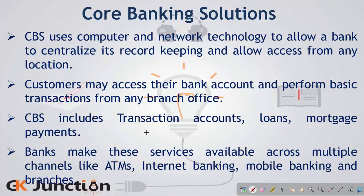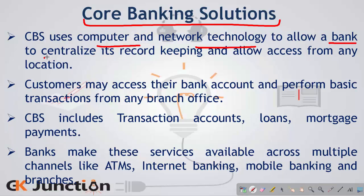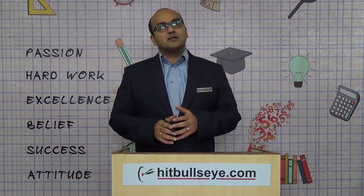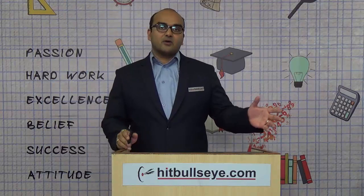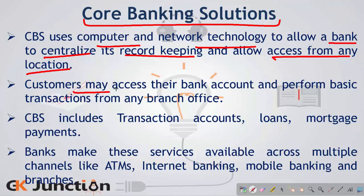Next, we try to understand a very important concept: Core Banking Solutions (CBS). CBS uses computer and network technology to allow a bank to centralize its record-keeping and allow access from any location. This is very important because all the transactions made within a bank are centralized and you can access the services of a bank — for example, taking out money — from any place in the country or across the world. Customers are allowed to access their bank accounts and perform basic transactions from any branch office. It includes transactions, loans, mortgage payments, etc.